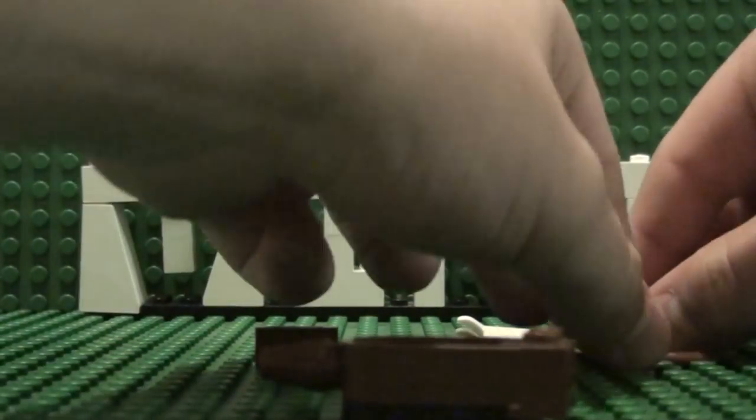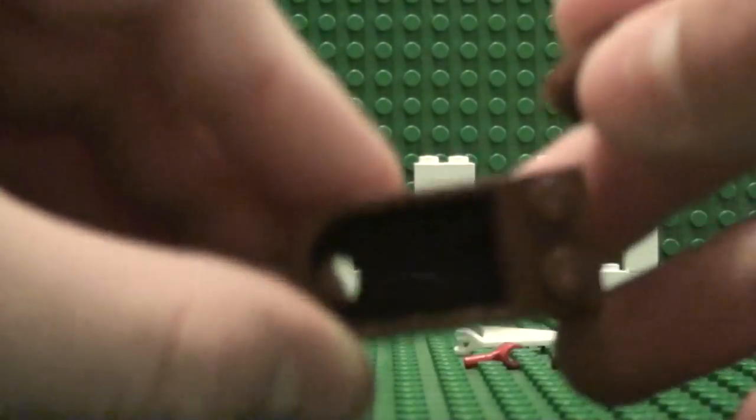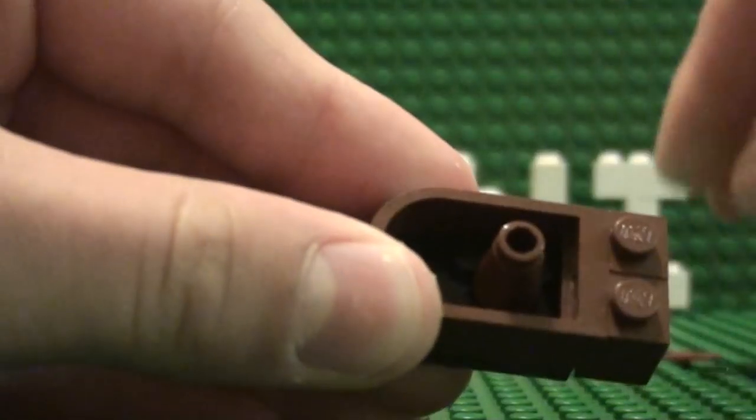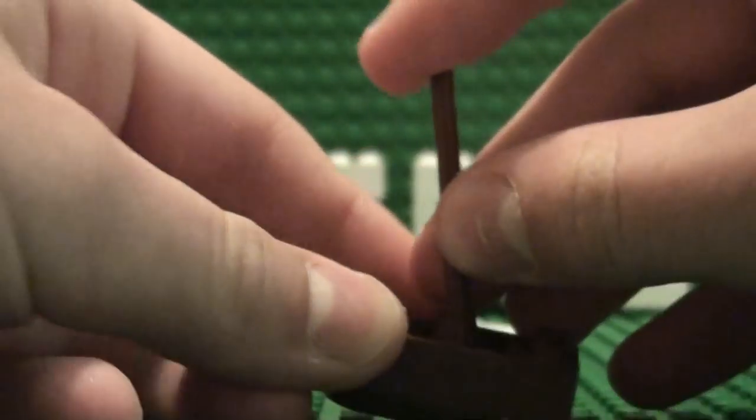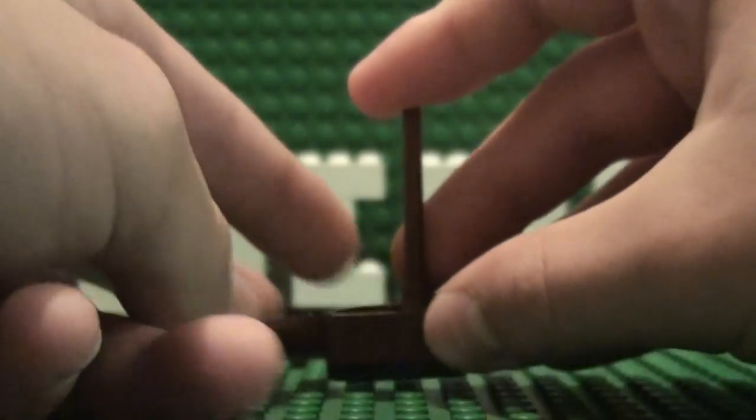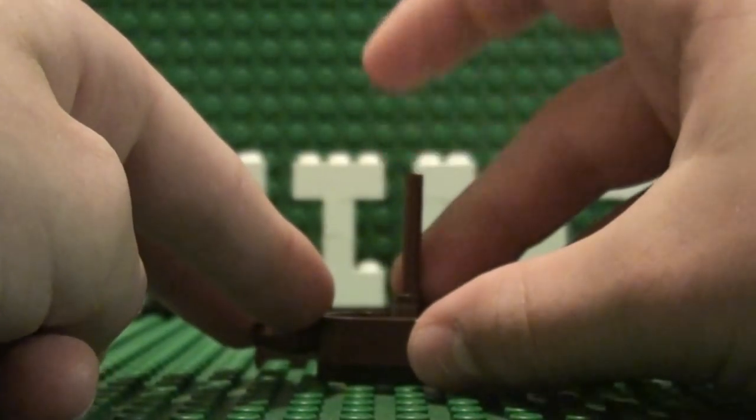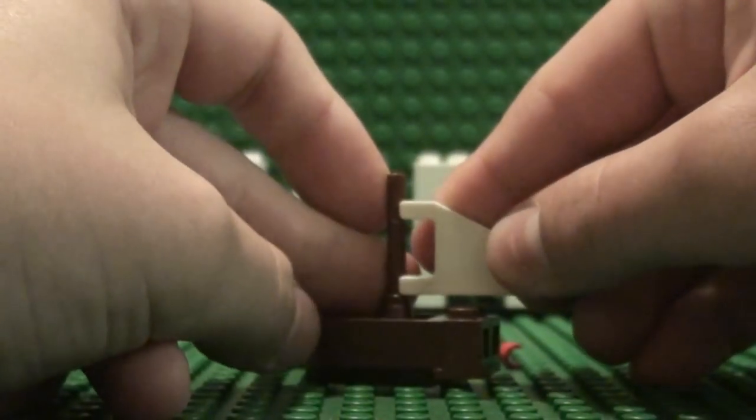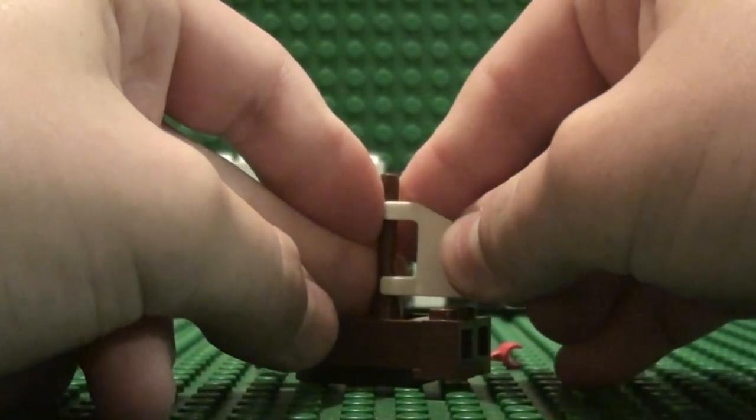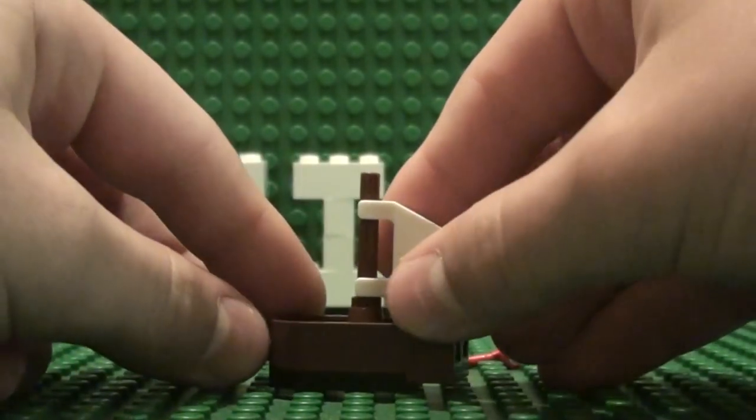Next, take your other cone piece and place it in the middle of the studs at the bottom. Take your bar and slide it in there. Then take your triangular flag piece and place it here.